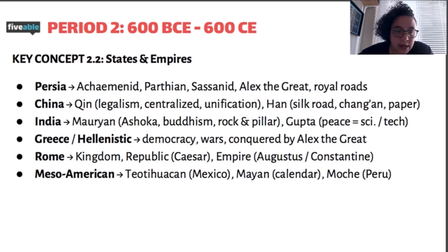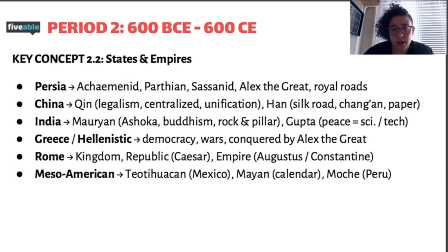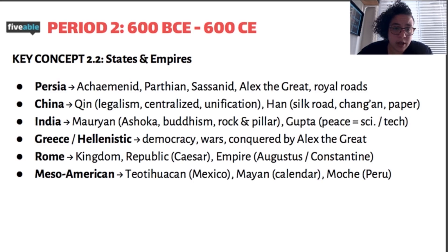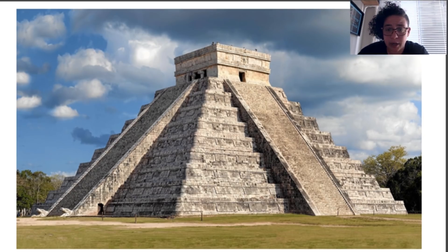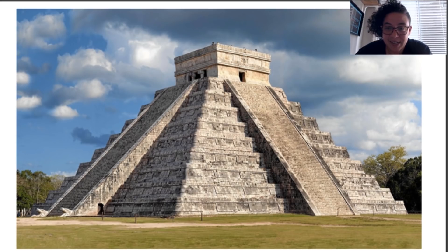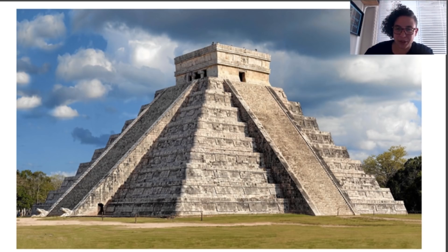One last part of the world to focus on is Mesoamerica, with plenty of contributions. You have Teotihuacan, the Mayans, and the Moche. All of them are very similar to the other classical empires. The monumental architecture in Mesoamerica still has that pyramid shape — not aliens, just similar things happening across the world.